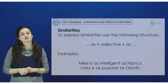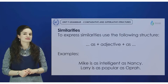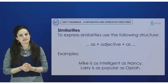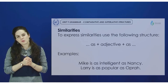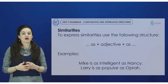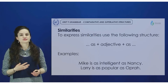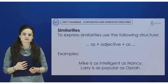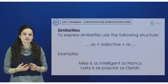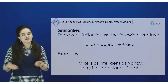At the same time, I'd like to mention one more detail. When you want to compare two things and emphasize their similarity or equality, you use neither an ending nor an additional word like 'more.' Instead, you use the construction: as + adjective + as. For example, 'Mike is as intelligent as Nancy' — this emphasizes their equality.